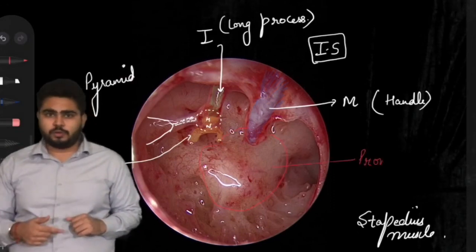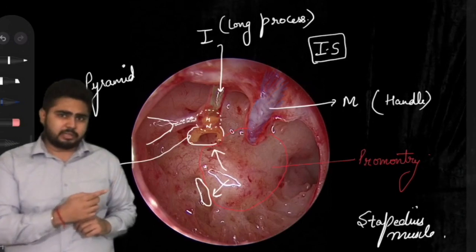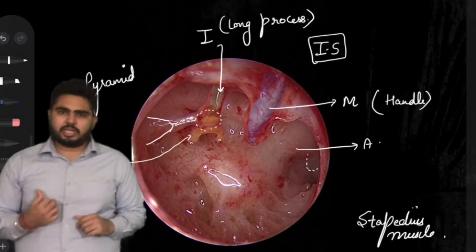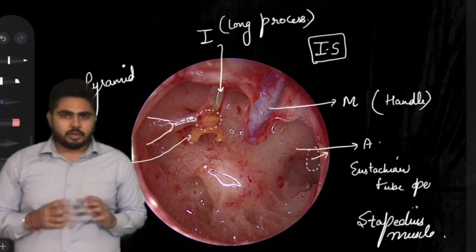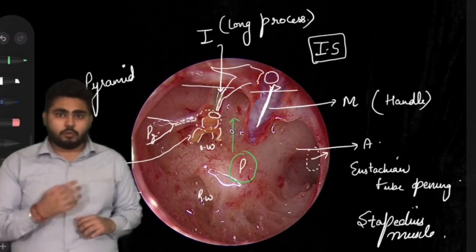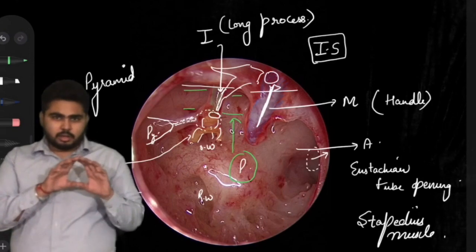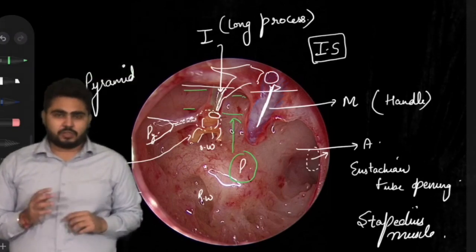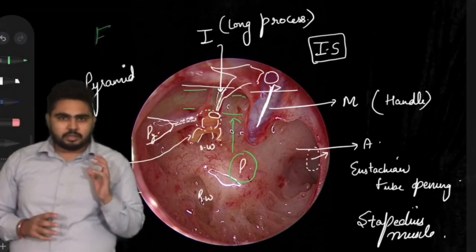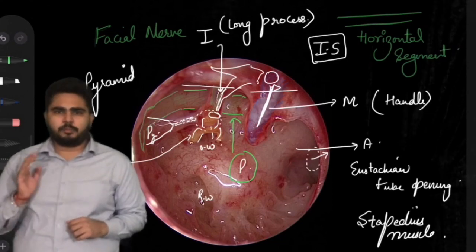This will be the promontory, the round window, the oval window. Anteriorly we will find the opening of the Eustachian tube, and posteriorly we have the pyramid. Looking closely, just above the promontory and just above the oval window, we see a horizontal green canal — a bony canal — which will house the facial nerve, the horizontal part of the facial nerve, or the tympanic part of the facial nerve. This is where the facial nerve lies on the medial wall of the middle ear.